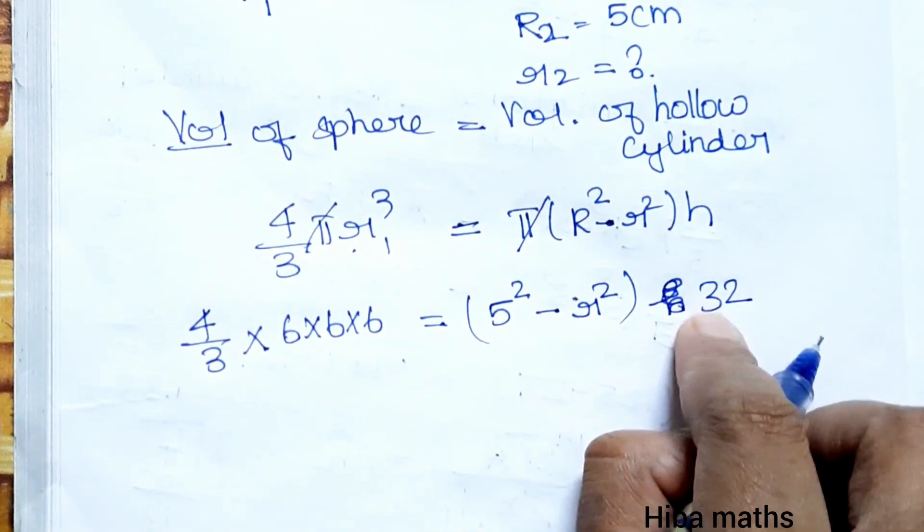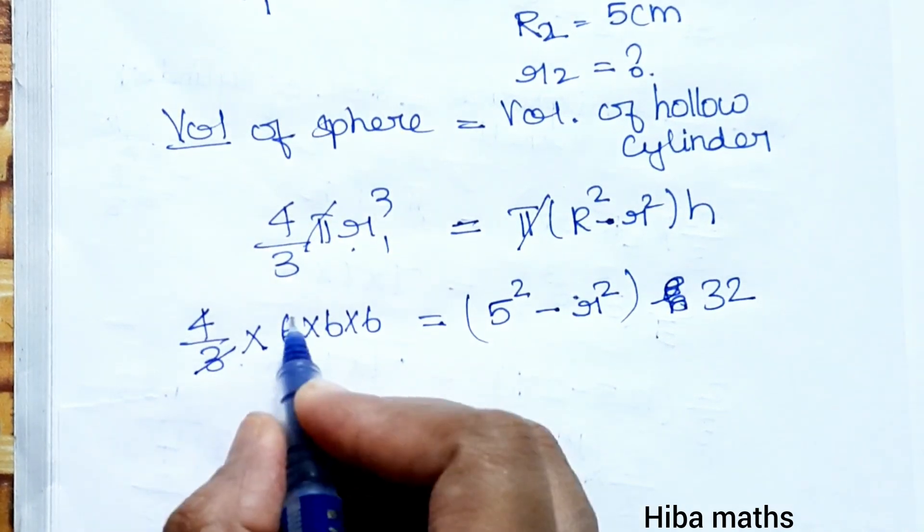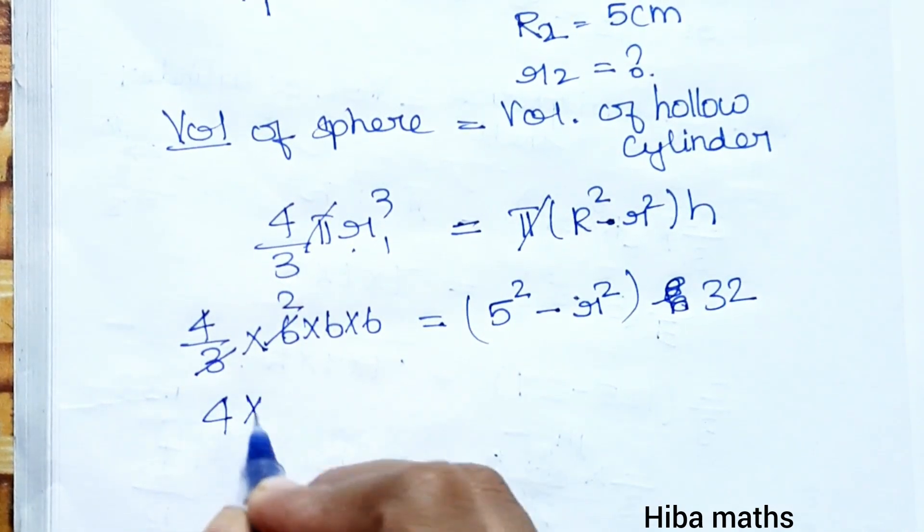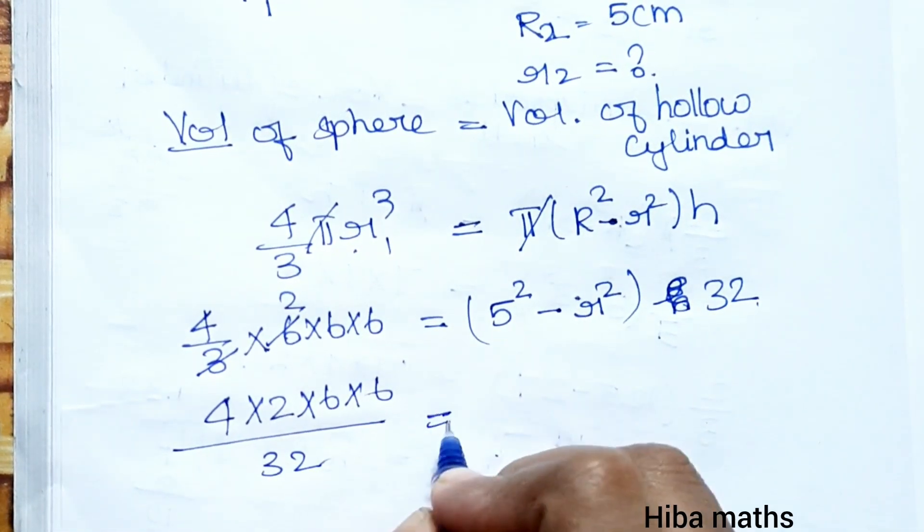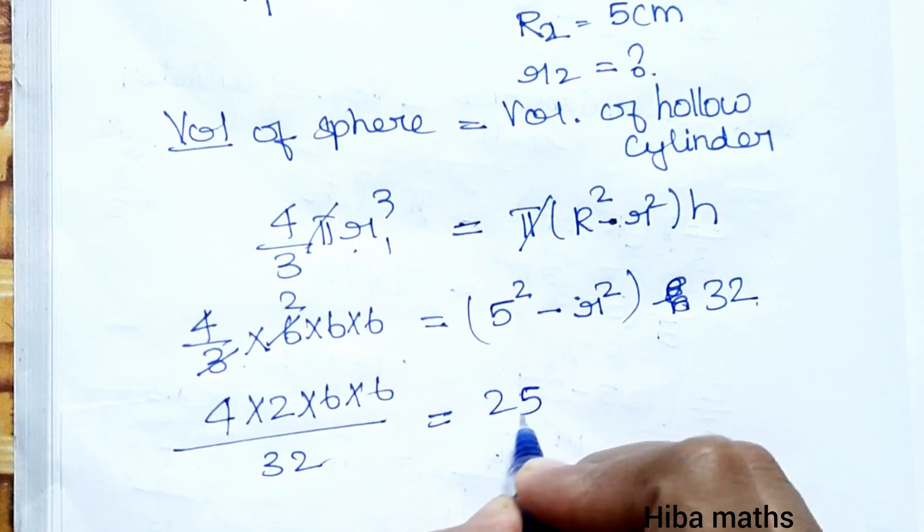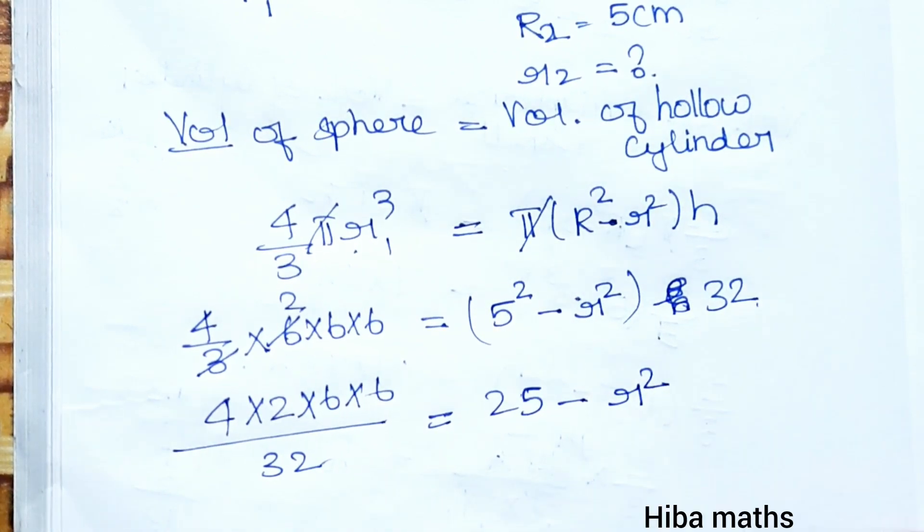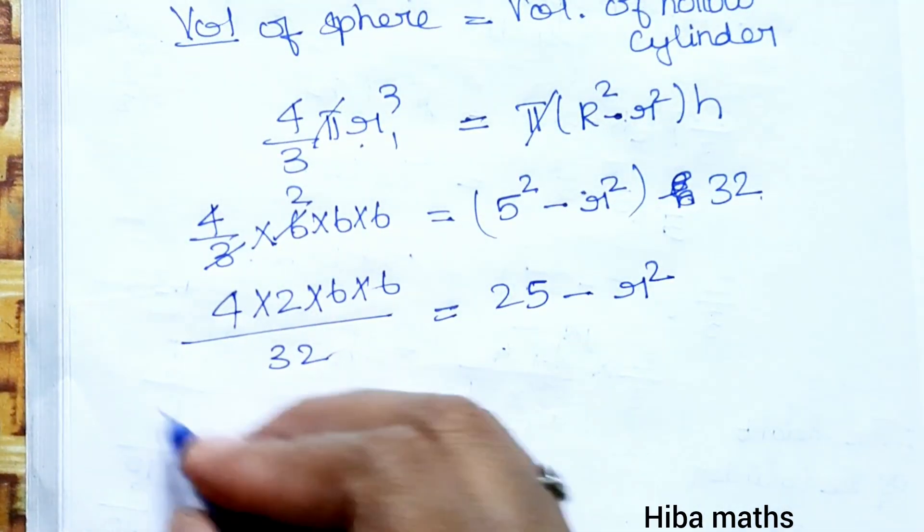We have 4 × 2 × 6 × 6 divided by 3 × 32 equals 25 minus r². First we have to solve this.